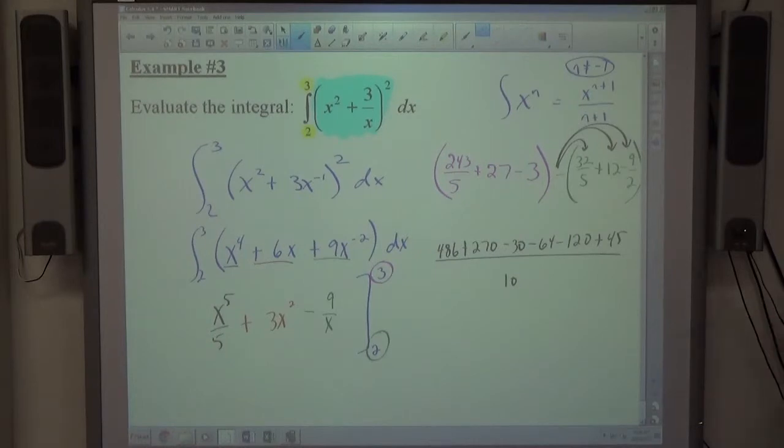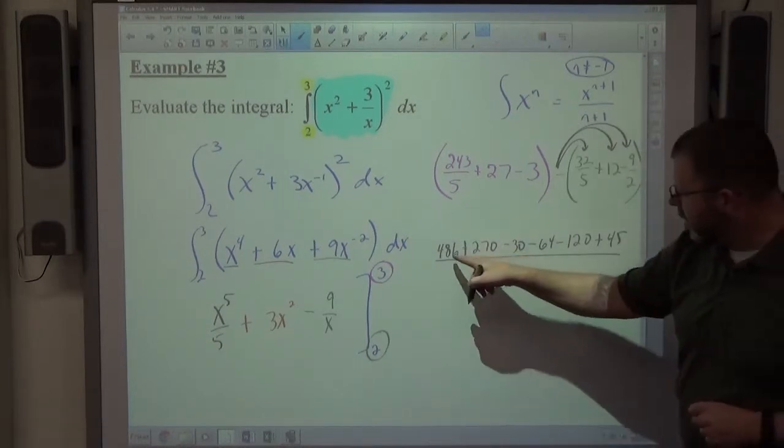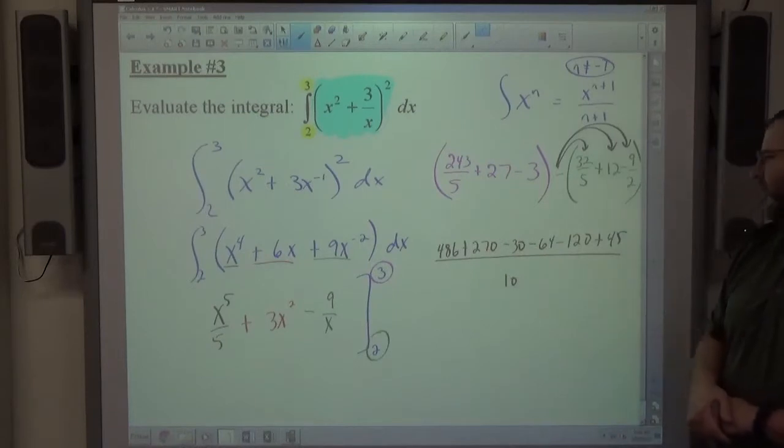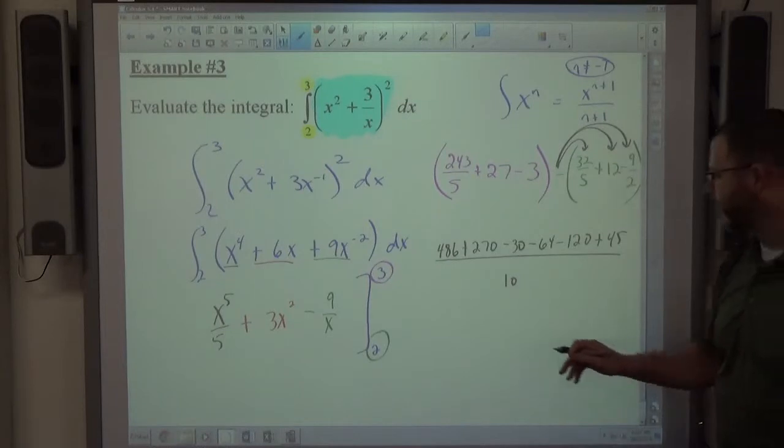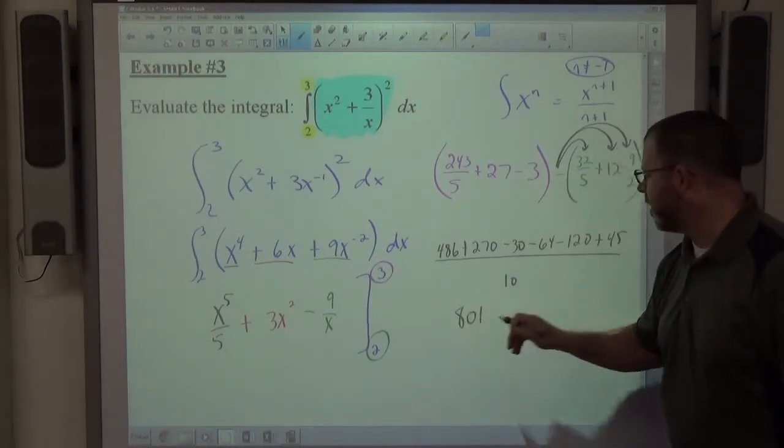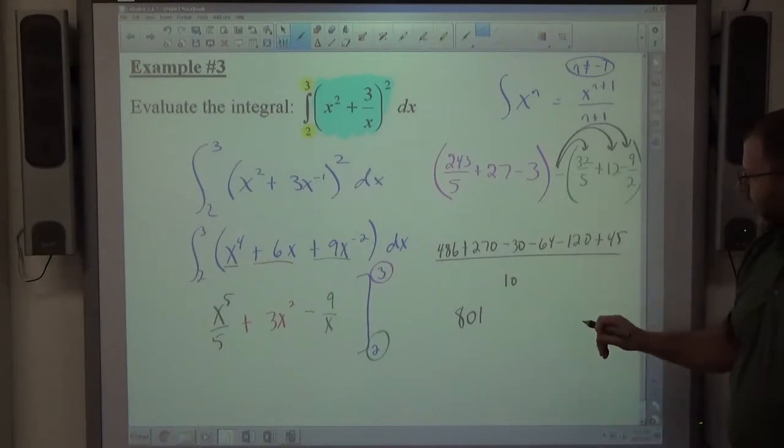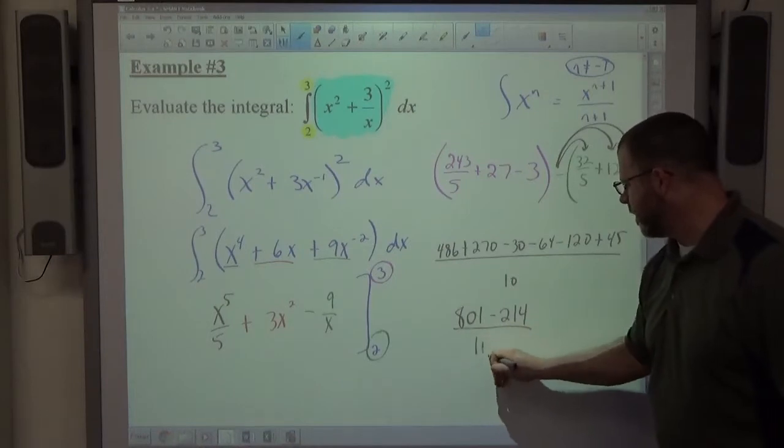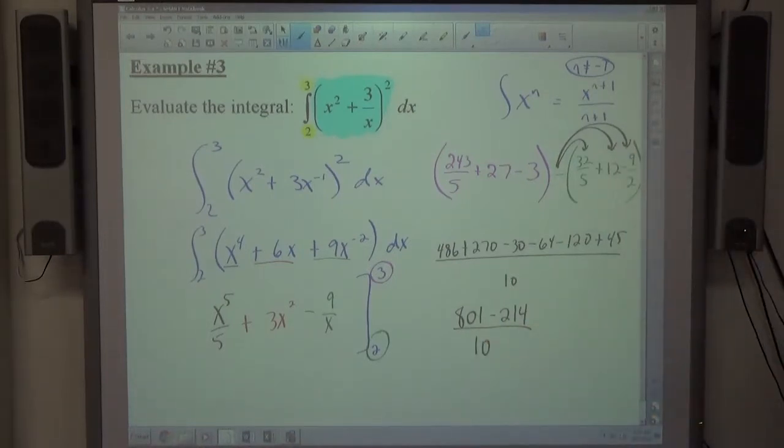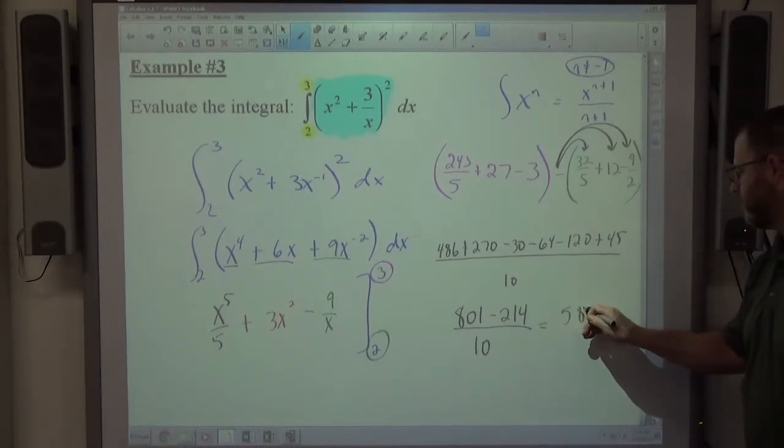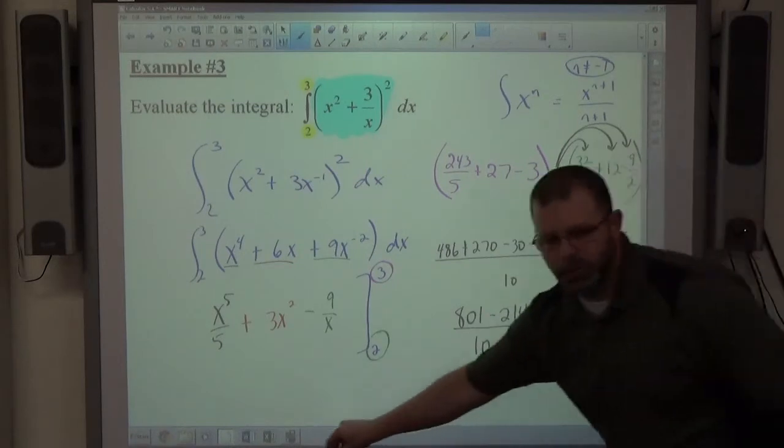So if I add up all the positives and add up all the negatives on top, 486 plus 270 is like 756, plus 45 is like 801. And then 30 plus 64 is 94, plus 120 is negative 214, over 10. And 801 minus 214, 587, 587 tenths would be the answer to that.